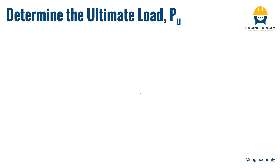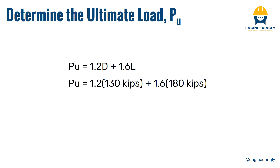We'll go to the first step: calculating the ultimate load. The load combination is 1.2 times dead load plus 1.6 times live load. This combination usually dominates, except where wind, earthquake, or other factors produce higher values — in which case the governing combination is used. With a dead load of 130 kilopounds and live load of 180 kilopounds, the ultimate load is 444 kilopounds.